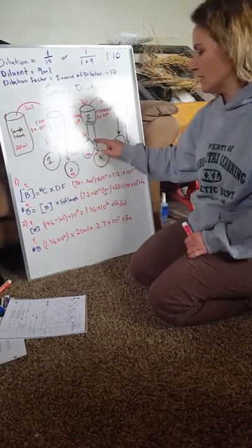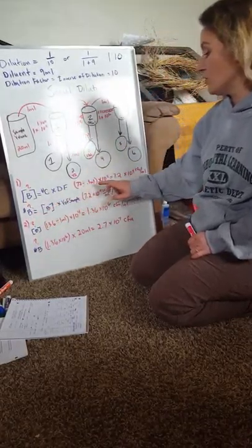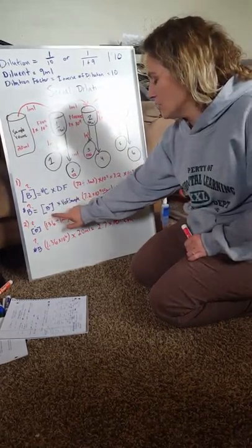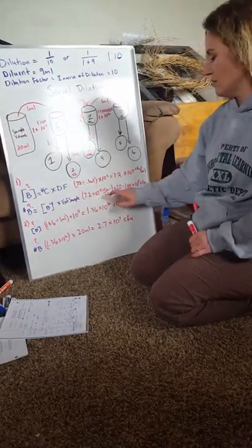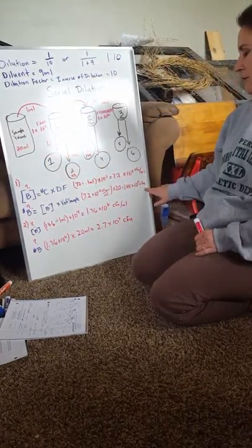And then another example. We're going to find the number of bacteria using the concentration that we found before. So we have the concentration of the bacteria right here times by the original sample to get this as the number of bacteria.